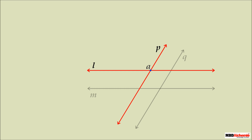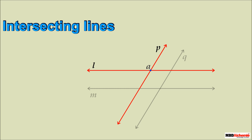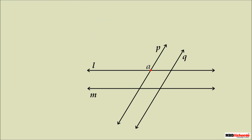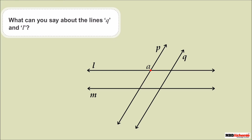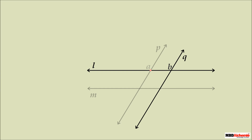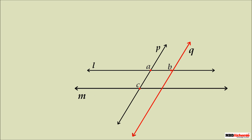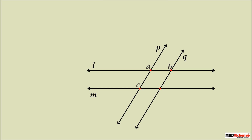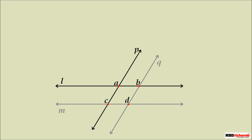Lines q and l are intersecting each other at a point, say B. Similarly, line p intersects line m at a point, say C, and line q intersects line m at a point, say D.